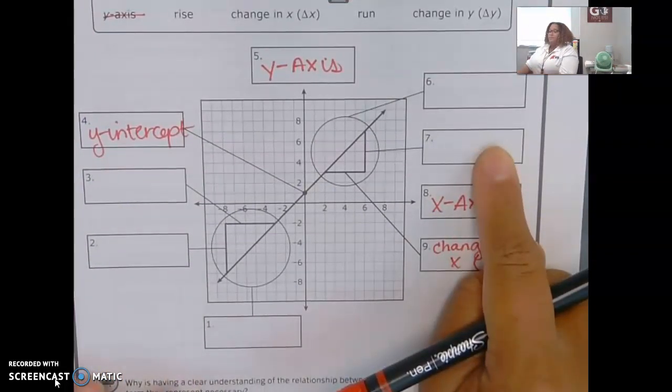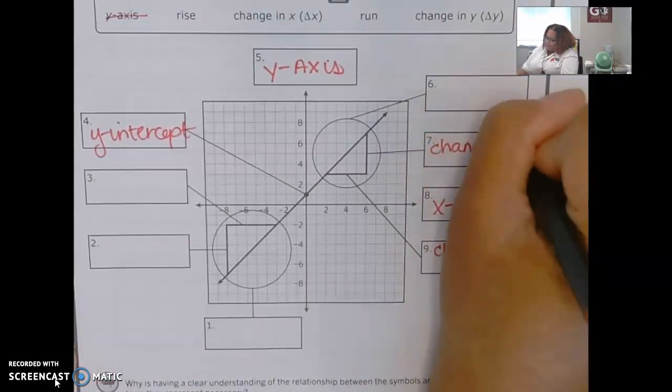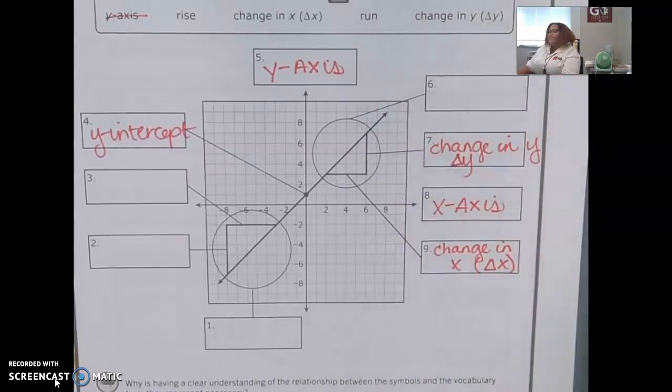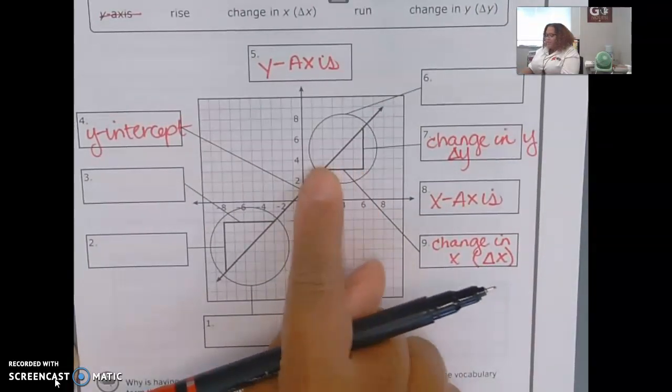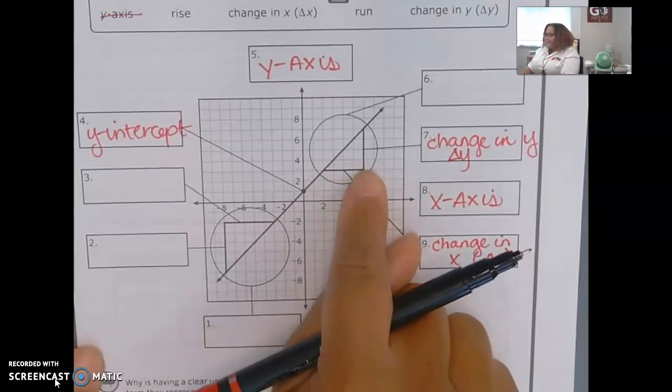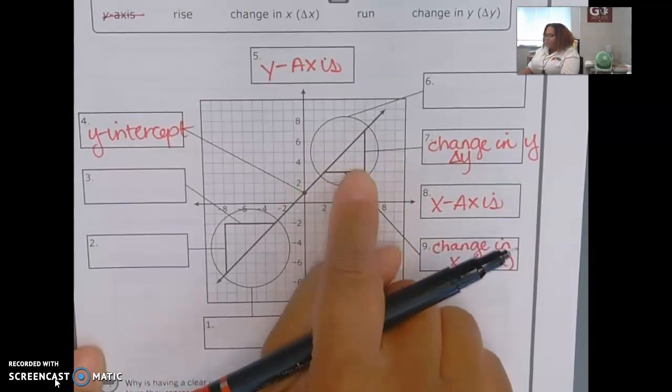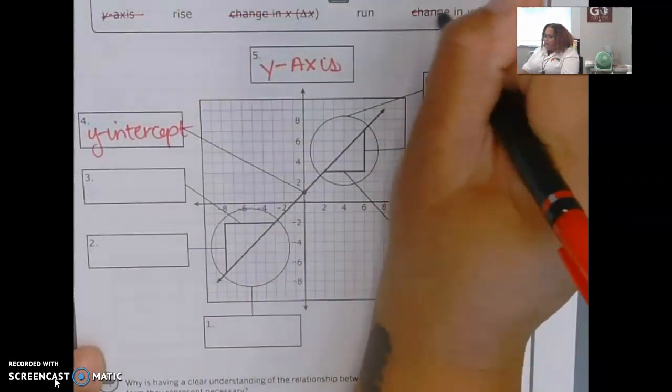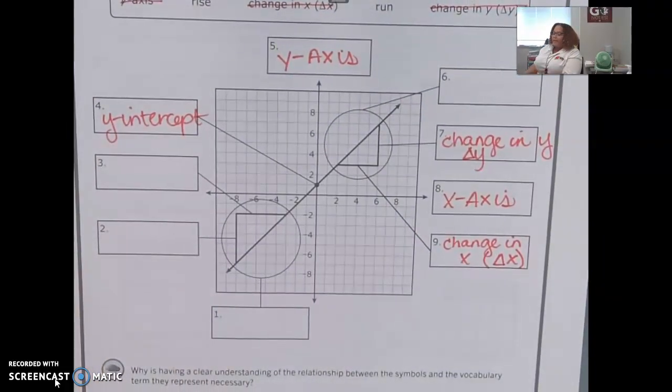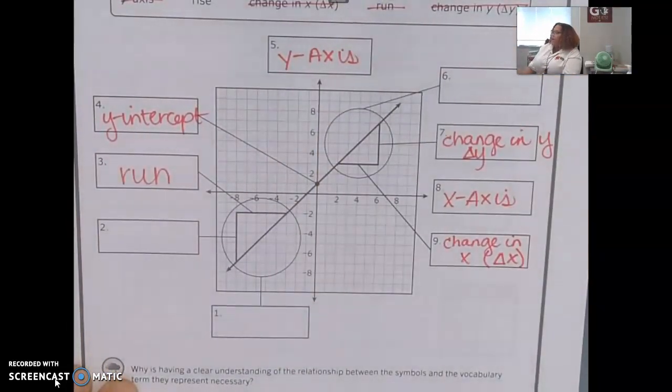So then if this is the change in x, this would be the same as this. Number seven would be the change in y. And that's gonna be delta y. Now I need their synonyms because this line is going left and right, and this goes up and down. So if this is going up and down and this is going left and right, what other words can I use from my word bank to apply? Yes, number three is run because I'm going left and right.